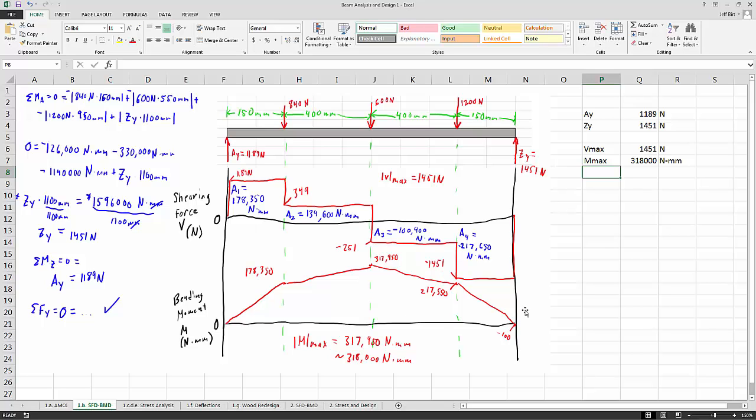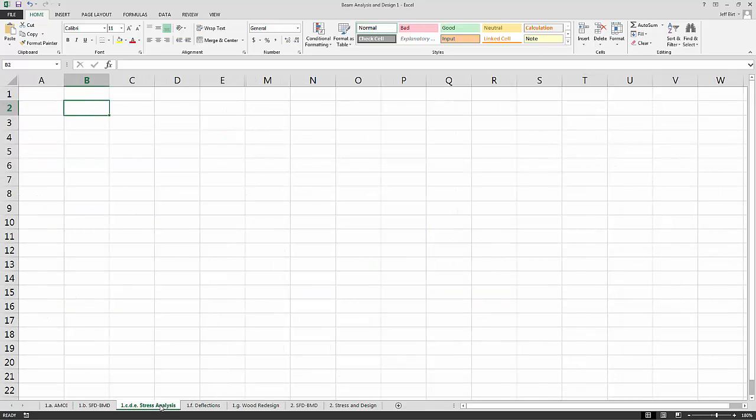So our bending stress is calculated using the formula bending stress equals M·C over I, or we can also use this formula, M over the shape modulus S, where the shape modulus is equal to I divided by C.